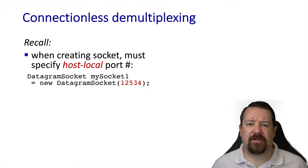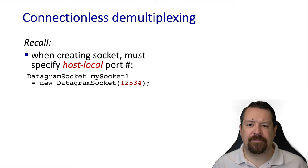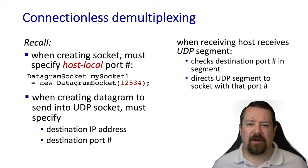Tying this back to socket programming: when creating a UDP socket, the application specifies a port number — the port number on the local host which this socket will use to receive messages. When the socket is used to send messages, that port number will be listed as the source port in the transport layer header. This means the application must also supply the IP address and port number of the remote process, because that information is not stored in the socket. When the UDP socket receives a segment, the IP header will already have been removed, and it just checks the port number in the transport layer header to deliver the message to the correct socket.